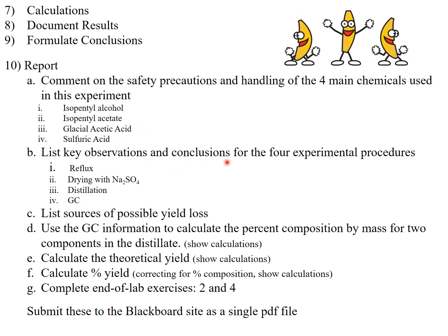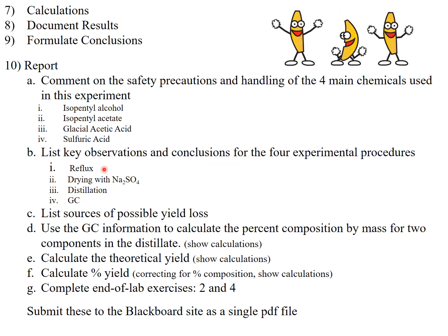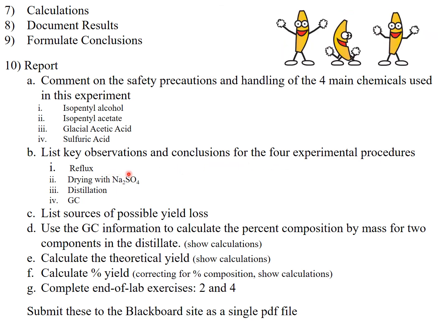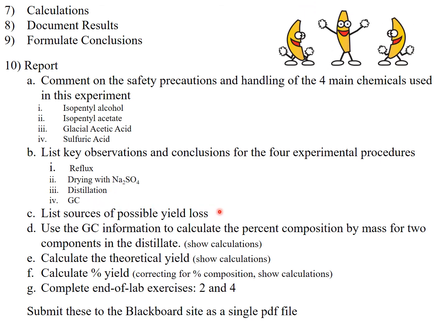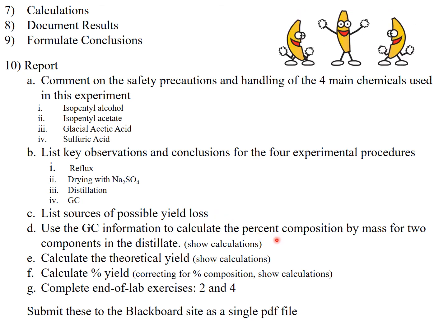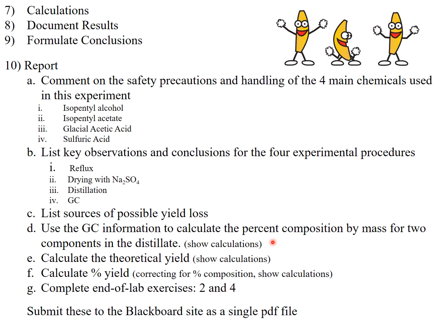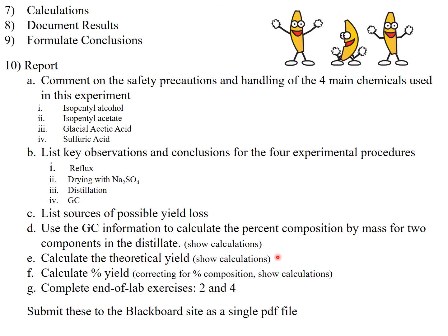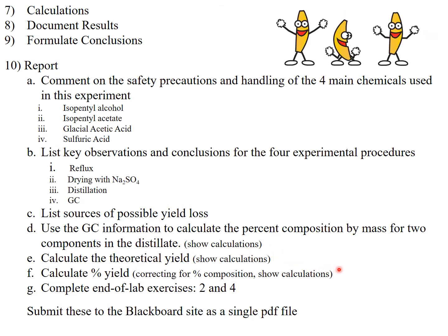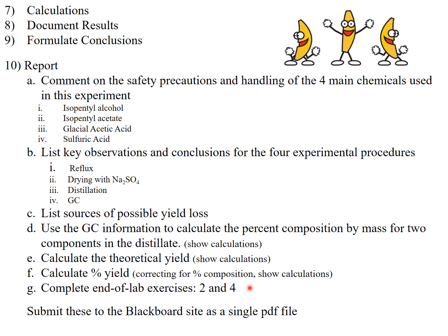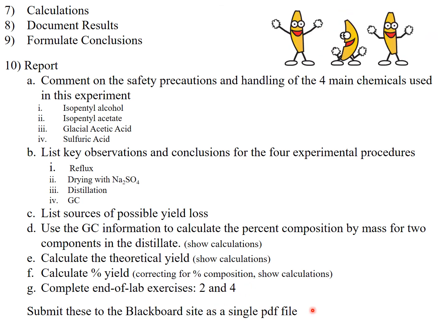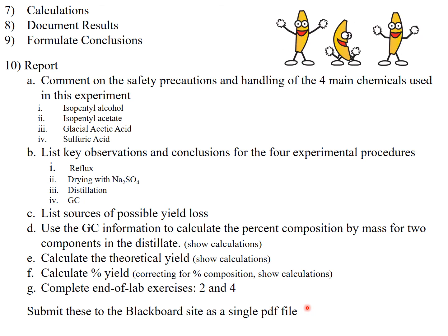List the key observations and conclusions for the four experimental procedures: the reflux, the drying, the distillation, and the GC. List sources of possible yield loss. Use the GC information to calculate the percent composition by mass for the two components. Calculate the theoretical yield and the percent yield, correcting for composition as determined by the GC. Complete end-of-lab exercises two and four and submit these to the Blackboard site as a single PDF file.